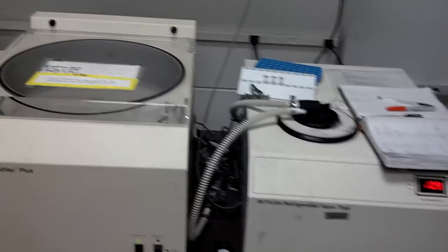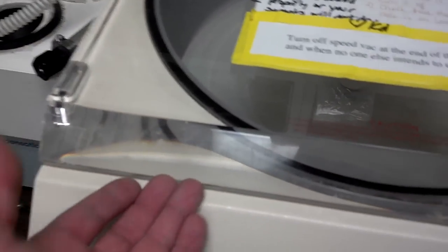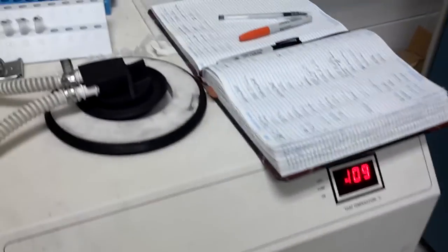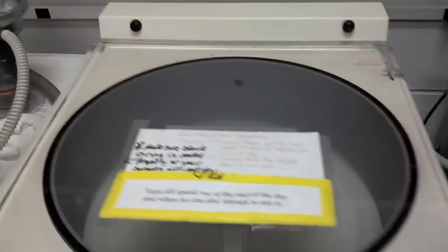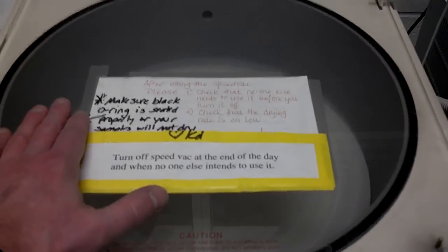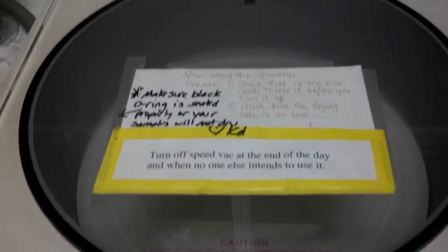This is called a speed vac. As you can see it's spinning. It's also under vacuum. What it is is this is under reduced pressure and it's slightly heated. So you put your samples in there and the solvent evaporates. It dries them out.